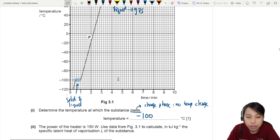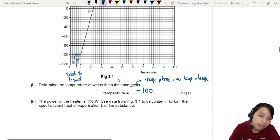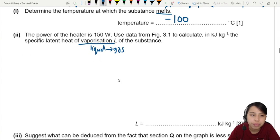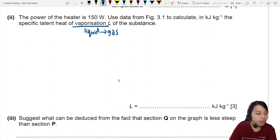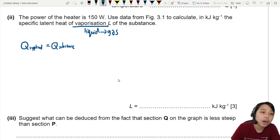So the power of the heater is 150 watts. Use data from the graph to calculate in kilojoules the specific latent heat of vaporization of the substance. Vaporization means we are now looking at the transition from liquid to gas. When you have power of heater, we need to do our energy equation. So here's the idea. Whatever heat is supplied goes to the energy of the substance. In this case, what's supplied is the electrical power. So we can think of it as P times time. Remember, power equals to energy over time, or Q over T. So if you want Q, you just take P multiplied by time.